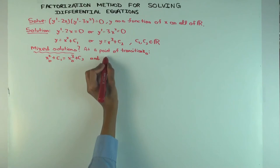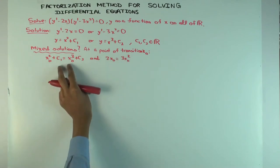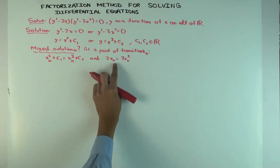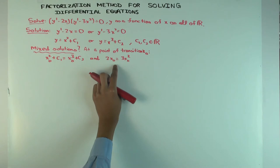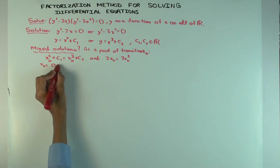The derivative condition gives us 2x₀ = 3x₀². The function value condition is not a real constraint because you can adjust c₁ and c₂. So the real condition is 2x₀ = 3x₀², which gives x₀ = 0 or x₀ = 2/3.